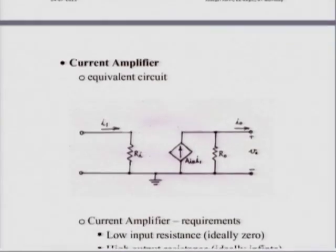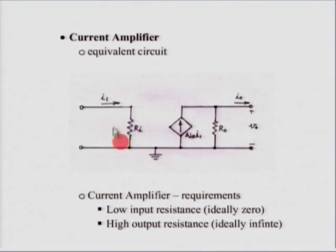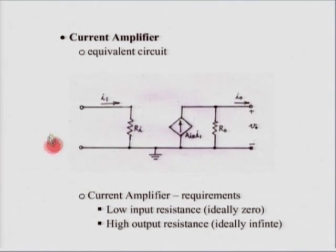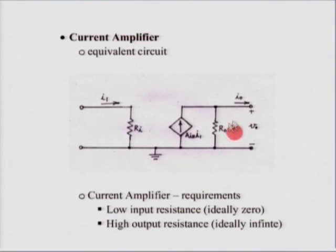We also talked about the current amplifier. In a current amplifier the scenario is very different: the input resistance should be as low as possible, ideally zero, so that if the input is a short circuit, the entire input current flows through the amplifier. The output uses a Norton equivalent representation, so ideally we should have high output resistance so that the entire output current i_o flows through the load.